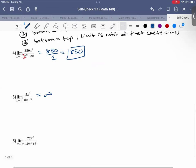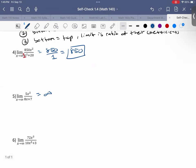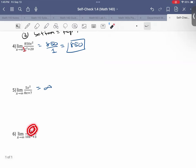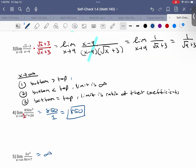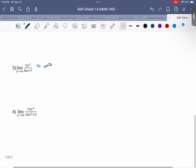Last one. Limit as x goes to infinity of 72x cubed over 10x to the 5th plus 3. So we have an x cubed up here, meaning to the 3rd power, and an x to the 5th power. So that means the power on the bottom is bigger than the power on the top. And when that happens, that means the limit is 0. So this limit is going to be equal to 0.